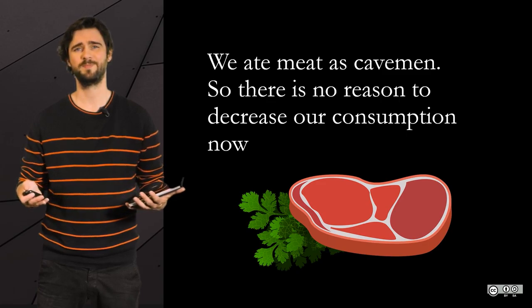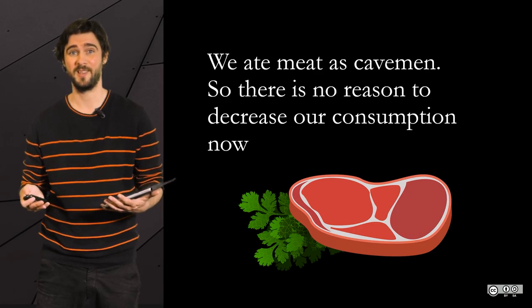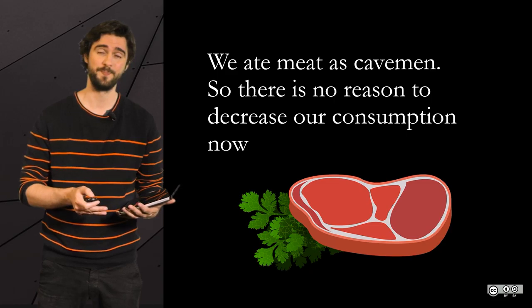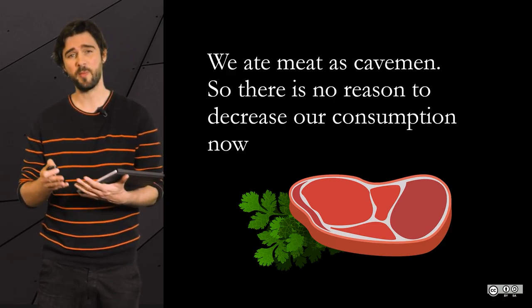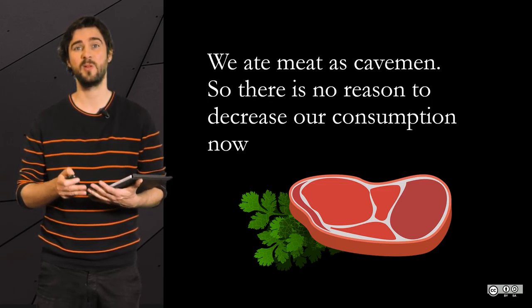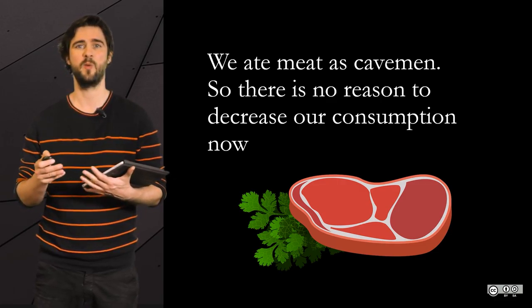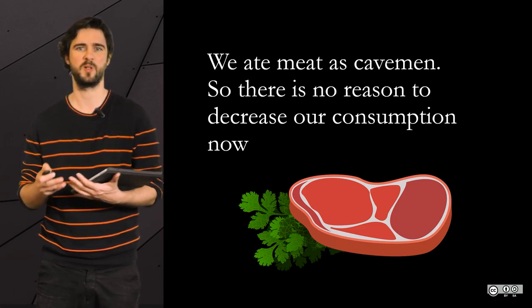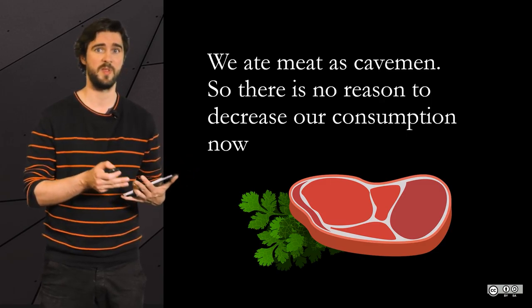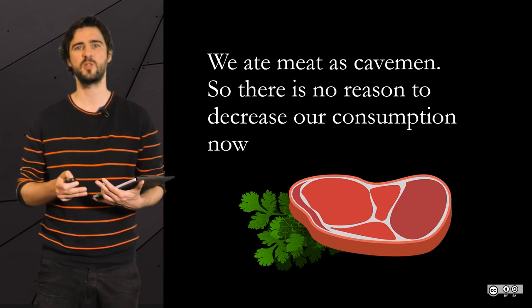The question of diet is also a common application of the naturalistic fallacy — and this time, not vegans. Here is how it goes: as humans, we have been eating meat since the dawn of time, and it was, in various instances, our primary source of proteins. So I see no reason whatsoever to decrease our average meat consumption now. Well, in the dawn of time, there were not as many humans as today, were there? So the impact on ecosystems was a little bit smaller.